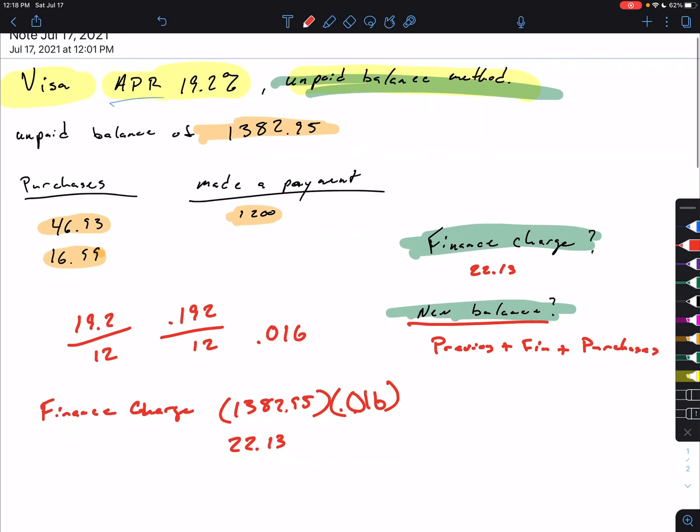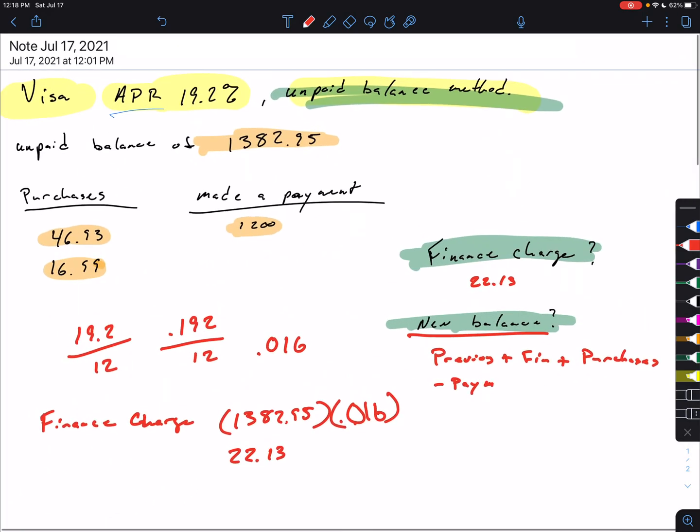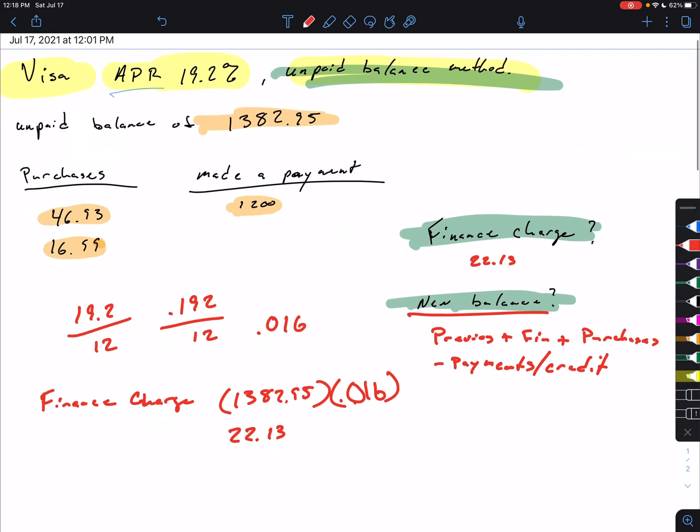And that could also be purchases or cash advances, anything that you're getting money from the card. And then we're going to subtract away any payments or credits. Like if you took something back, you get a credit. So that's what we want to do.